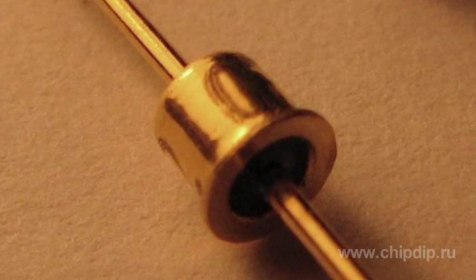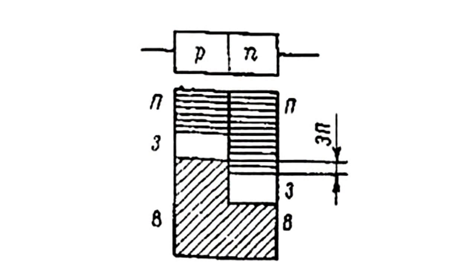The tunnel diode occupies a special place among semiconductor diodes because of its positive voltage feedback and good dynamic characteristics. The tunnel diode is generally defined by the tunnel effect, due to which electrons pass through the barrier from one permitted energy band to another.